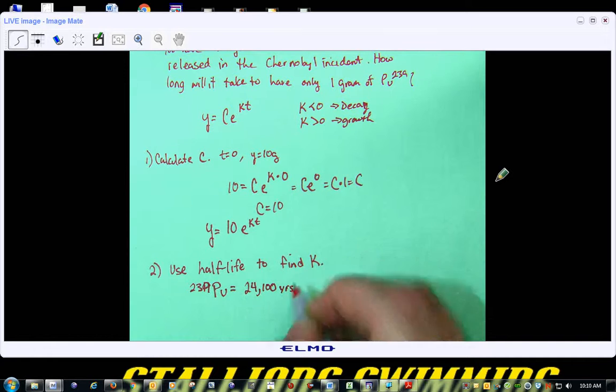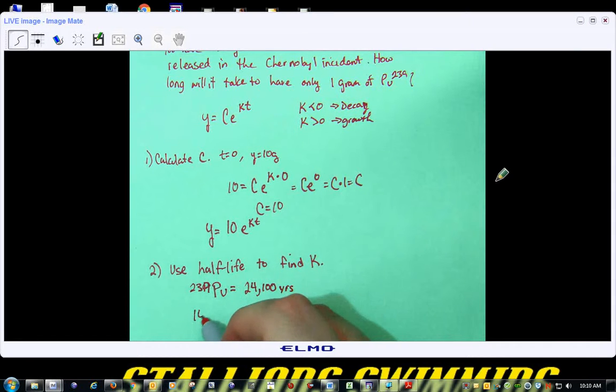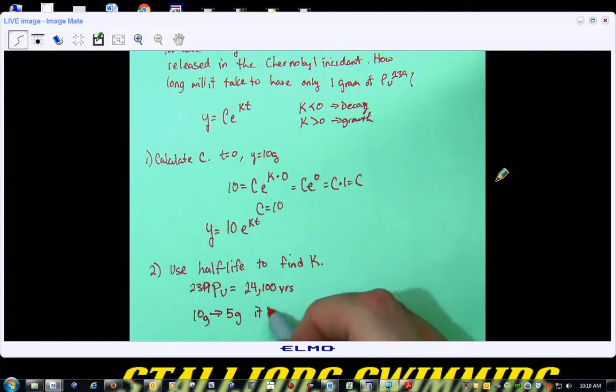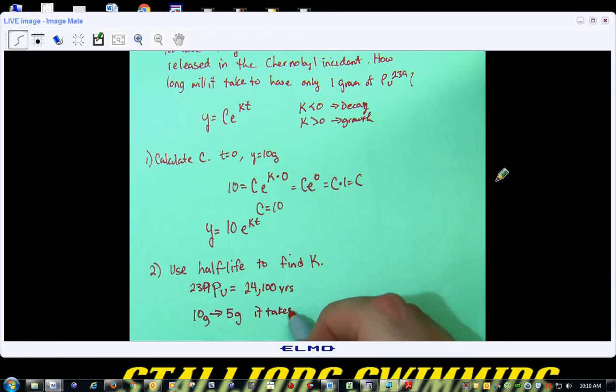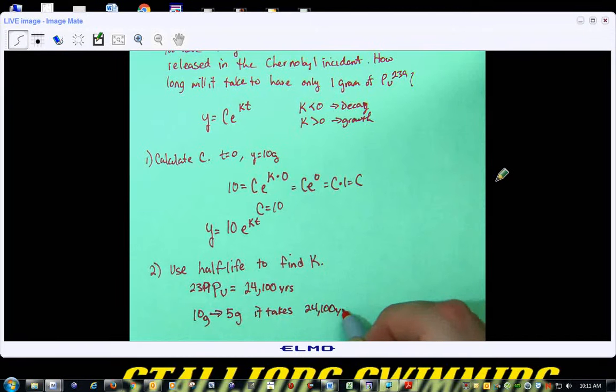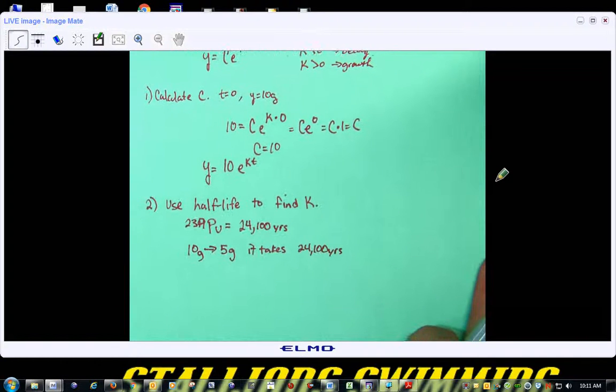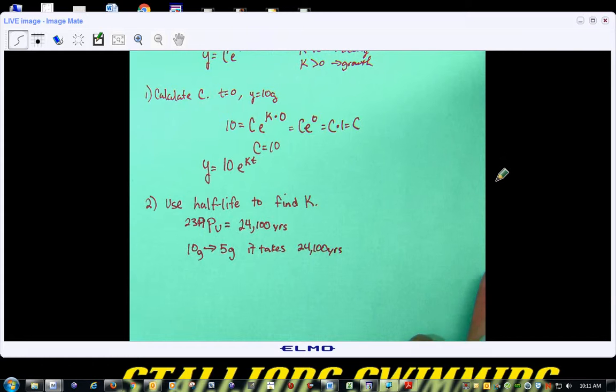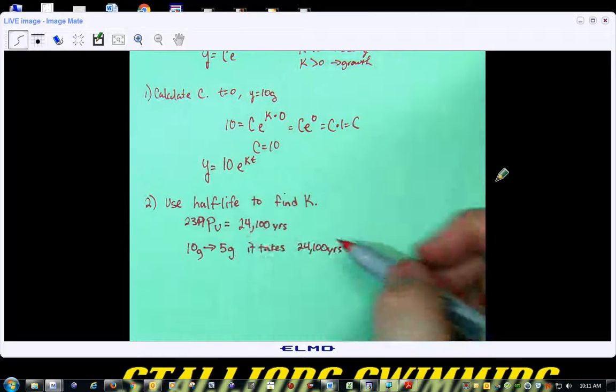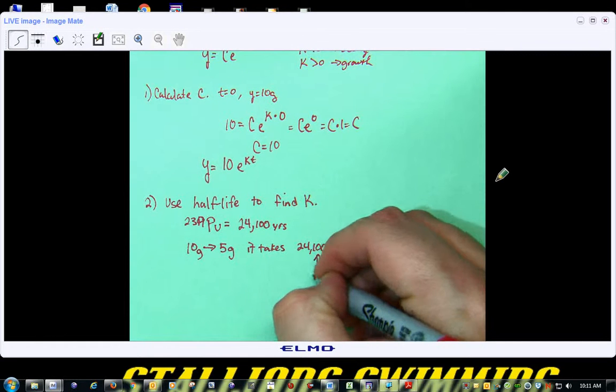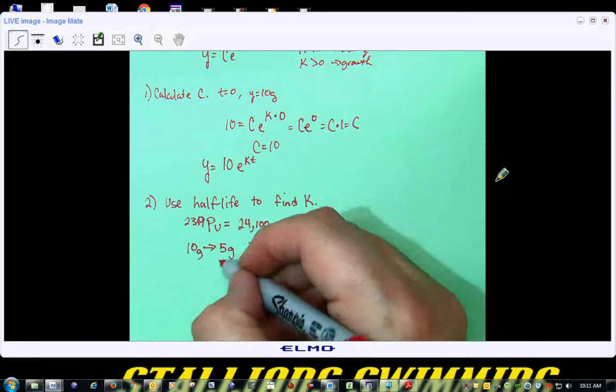So, that basically says, if you start with ten grams, and you go down to five grams, it takes 24,100 years. So, that's why a lot of the things that we use for nuclear energy, we have to have a lot of safeguards in place because it takes a long time for that stuff to decay and to get out of there. So, now, the nice thing is, this is a time. This is a Y value.